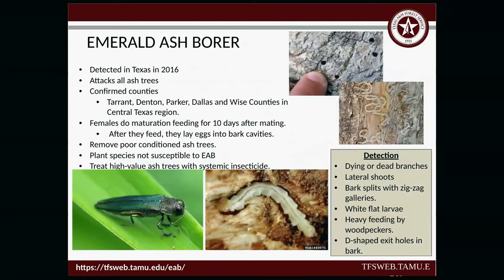Emerald ash borer was first detected in Texas in 2016. It attacks all ash species and has been confirmed in various counties. In this area, the confirmed counties are Tarrant, Denton, Parker, Dallas, and Wise counties. We added four of those this year — it started in Tarrant in 2016, and we added Denton, Parker, Dallas, and Wise all this year.